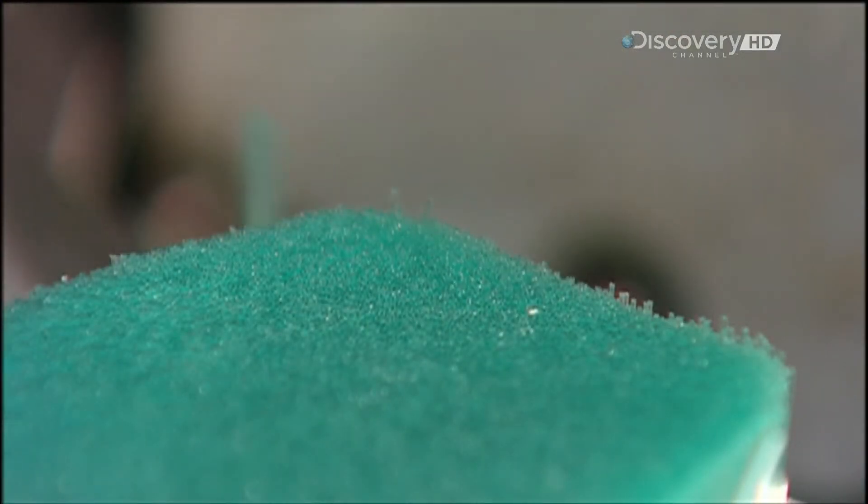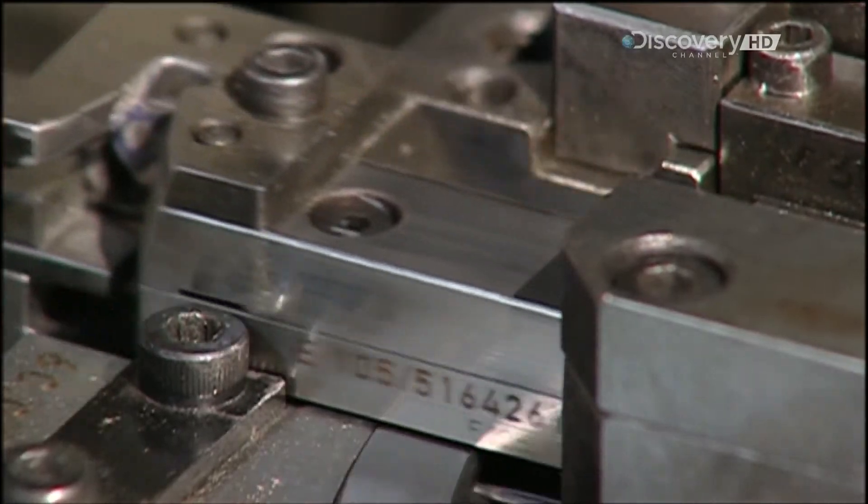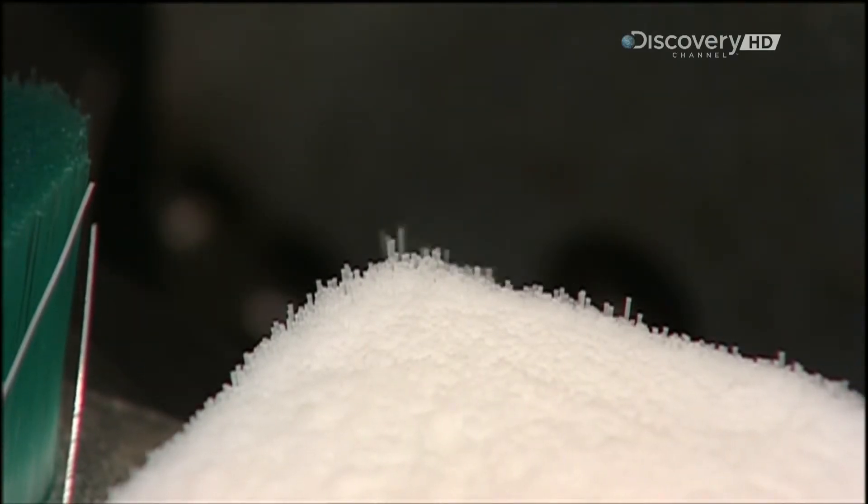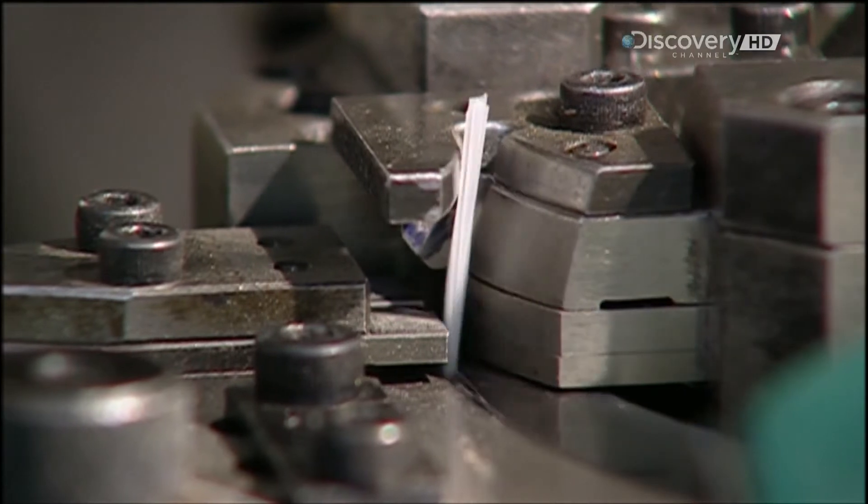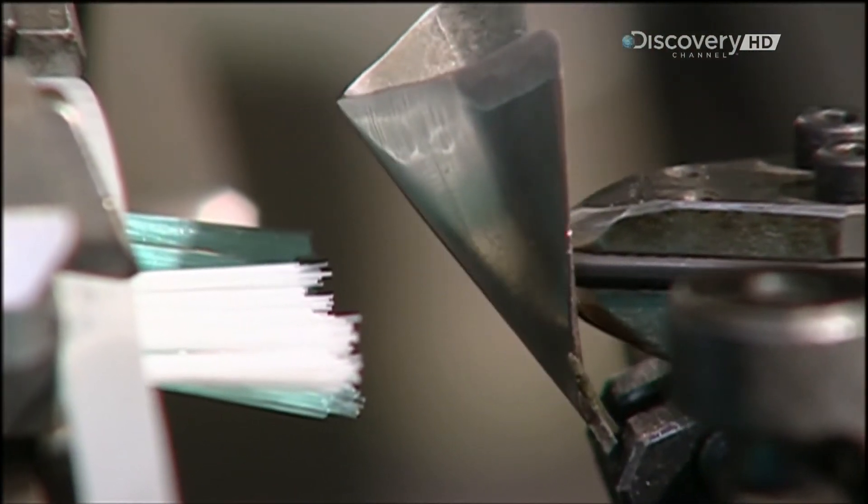Here's the bristle selection process in slow motion. The machine selects between 22 and 24 bristles for each hole in the brush. With 56 holes per toothbrush, that adds up to over 1,300 bristles for each brush.